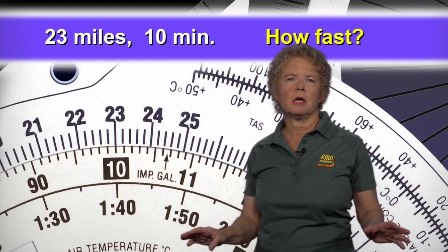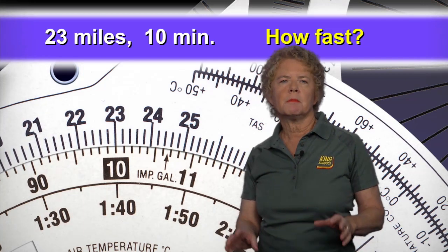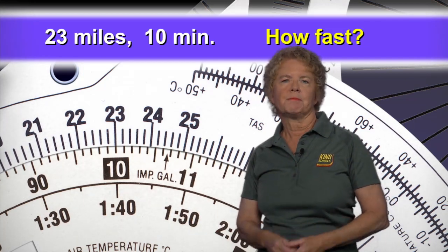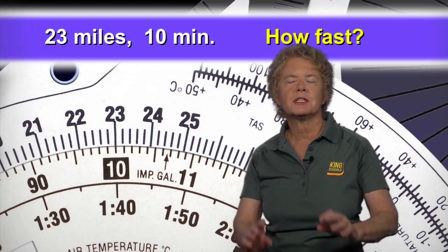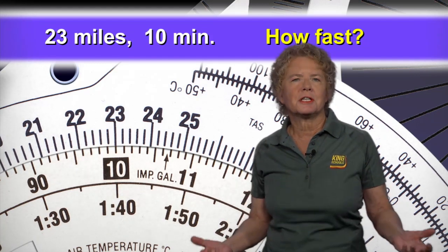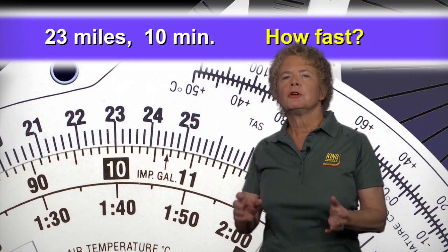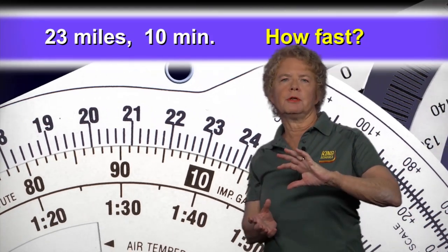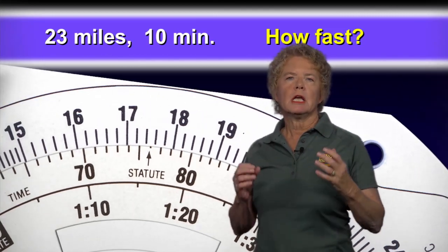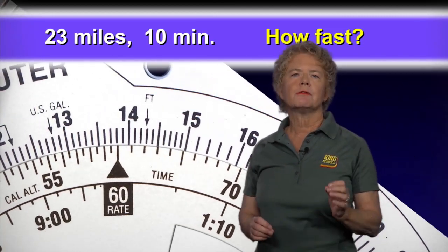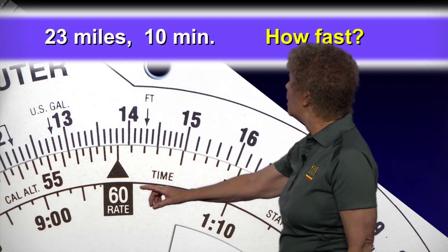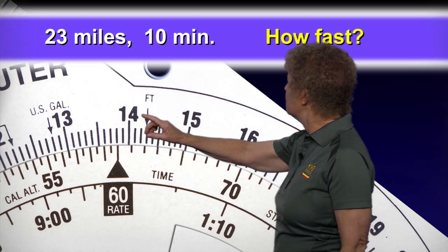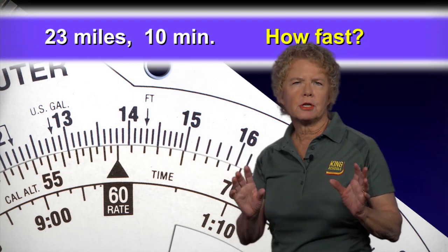And once that ratio is set up, we can find out how many miles we would cover in any number of minutes. What we want to know right now is how many miles we cover in 60 minutes, because there's 60 minutes in an hour. So turn the whole flight computer, and what you're doing is looking on the inner scale for 60 minutes. And when you find 60 minutes on the inner scale, on the outside scale, it will tell you how fast you're flying.